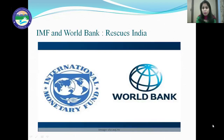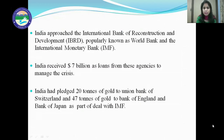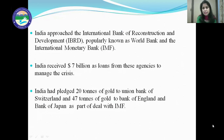Then India approached the IMF and World Bank — two international financial agencies. India approached the International Bank of Reconstruction and Development (IBRD), popularly known as the World Bank, and the International Monetary Fund (IMF). India received $7 billion as a loan from these agencies to manage the crisis. But India had pledged 20 tons of gold to the Union Bank of Switzerland, Bank of England, and Bank of Japan as part of the deal with the IMF.